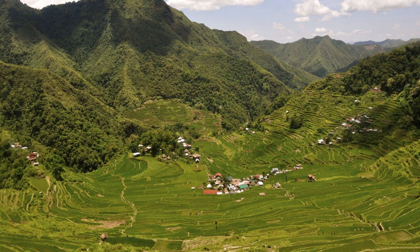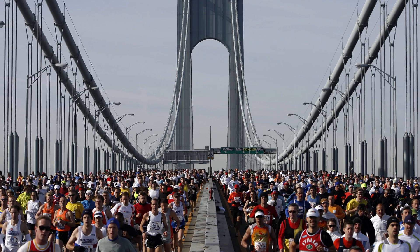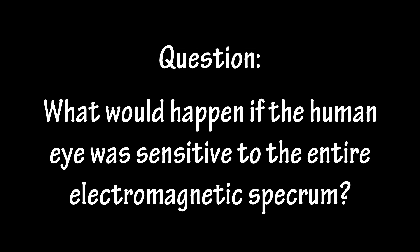Arguably, the most important aspect of our interaction with the world around us is our ability to see. Sight is just our brain's interpretation of different frequencies of visible light, otherwise known as electromagnetic radiation. But what would happen if the human eye was sensitive to the entire electromagnetic spectrum?